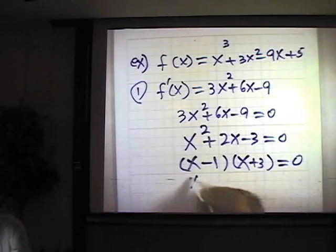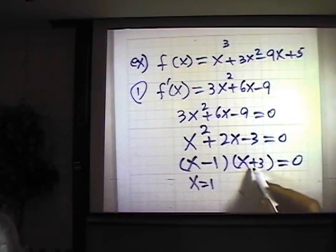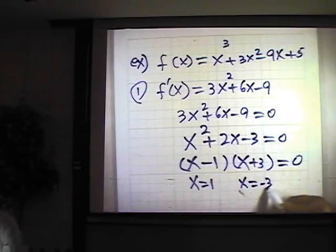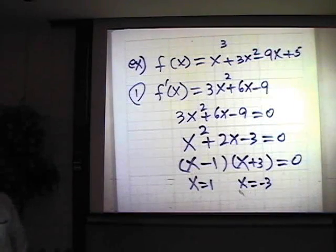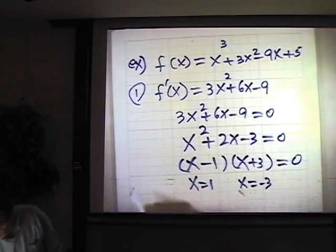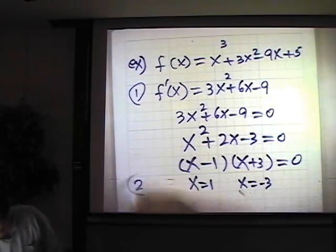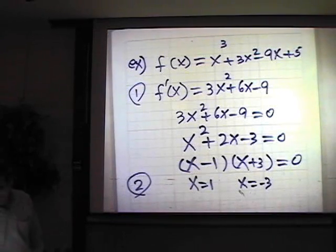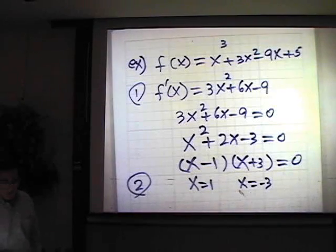From the factor (x minus 1) we get x equals 1, and setting (x plus 3) equal to zero gives x equals negative 3. Those are our only critical values. Step three: we set up intervals using these critical points and determine the signs of f prime of x on each interval.